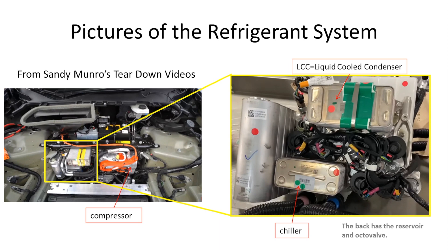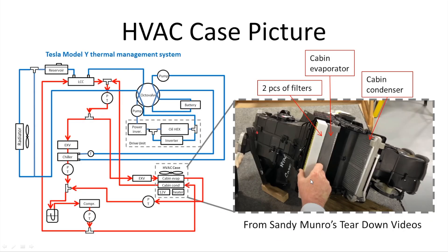Here is a picture under the hood of the Tesla Model Y. This is the compressor, this is a liquid-cooled condenser, and this is the chiller. Here is another picture from Sandy Munro's teardown video showing the HVAC case, which includes the filter, cabin evaporator, and cabin condenser.